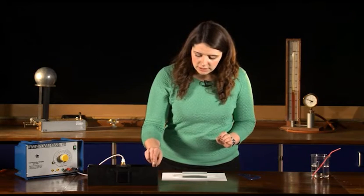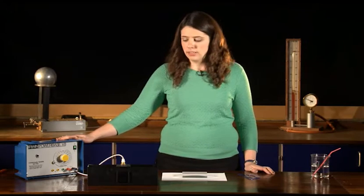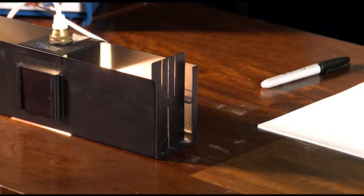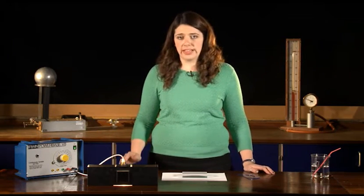Now the ray box is attached to the power pack and the power pack is what gives it its energy. Now when I turn it on, you'll see that the light turns on. You should have your ray box on about 12 volts because that will give you the best ray of light for your diagram.